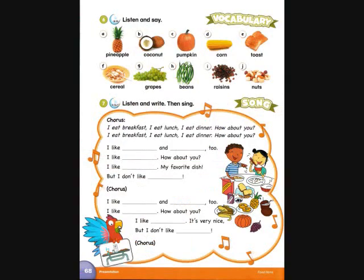Track B55. Page 68. Activity 6: Listen and say. A: Pineapple. B: Coconut. C: Pumpkin. D: Corn. E: Toast. F: Cereal.